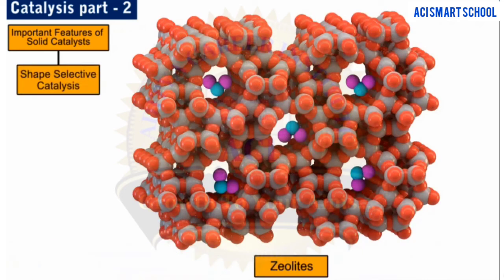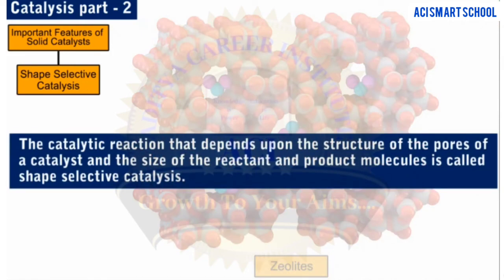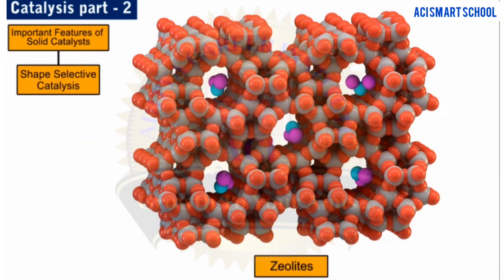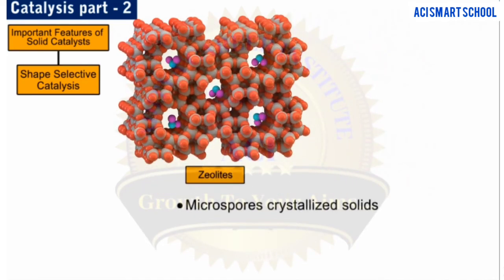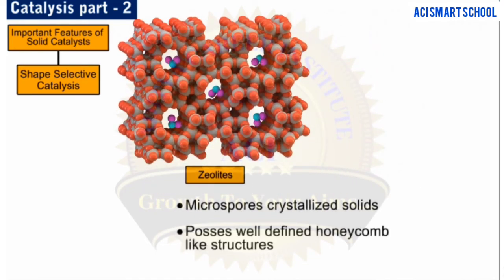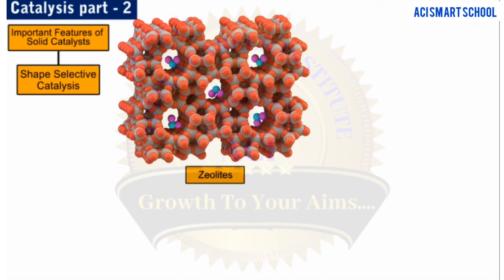Let us now learn about another important class of reaction: shape selective catalysis. The catalytic reactions that depend upon the structure of the pores of a catalyst and the size of the reactant and product molecules are called shape selective catalysis. An important category of compounds that have the ability to act as good shape selective catalysts are zeolites. They are microporous crystalline solids and possess well-defined honeycomb-like structures. Chemically, zeolites are aluminosilicates with the general formula M(x/N)[AlO₂]ₓ[SiO₂]_y · z H₂O, where N is the charge on the metal ion, which is either sodium, potassium, or calcium, and z is the number of water molecules of hydration.